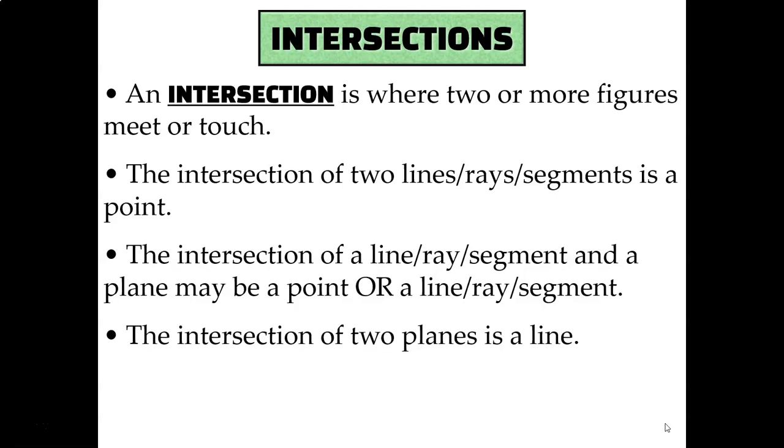The intersection of two lines or rays or segments is always just a single point. The intersection of a line or a ray or a segment and a plane might be a point, or it might also be a line or a ray or a segment. And the intersection of two planes is a line.